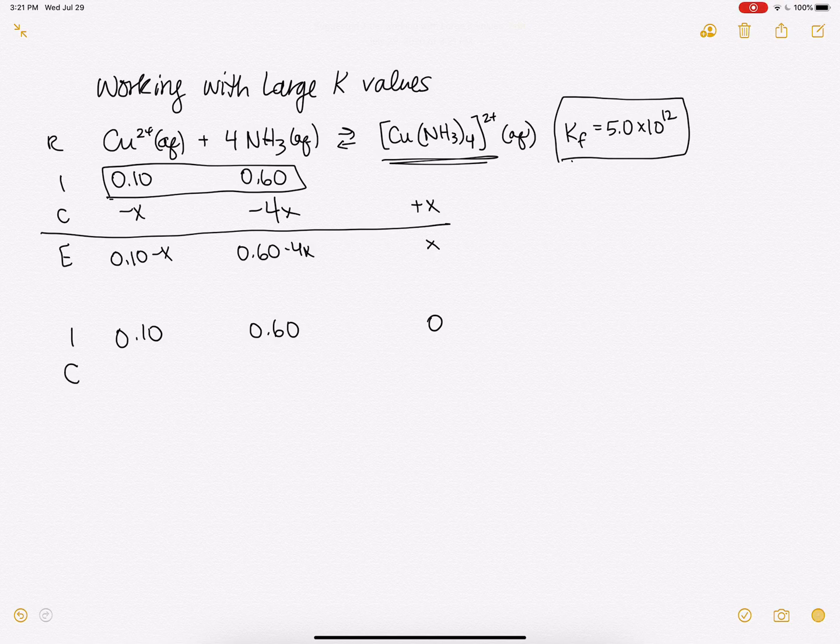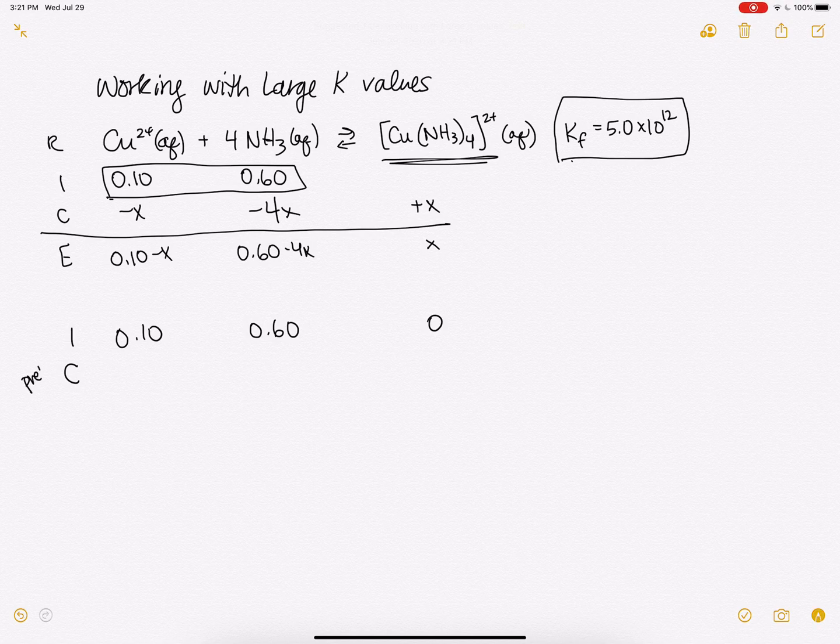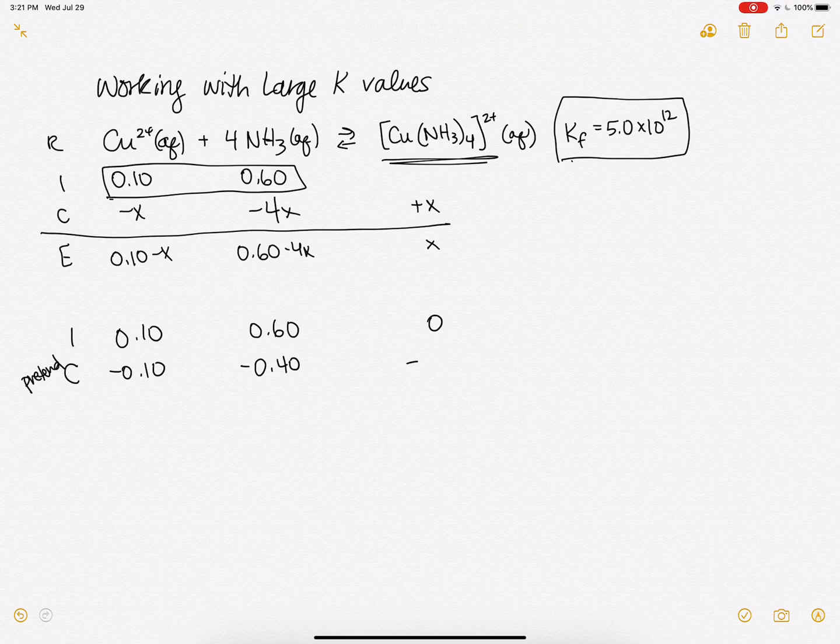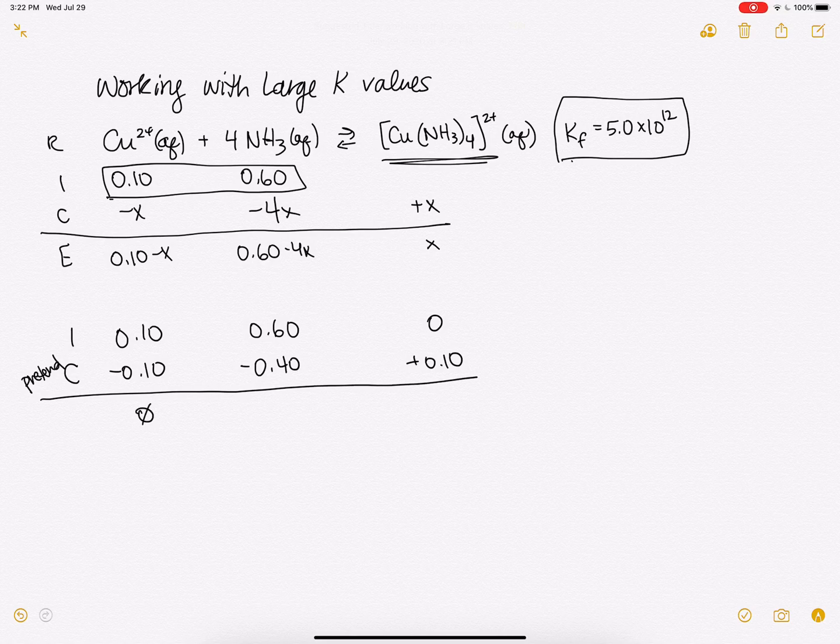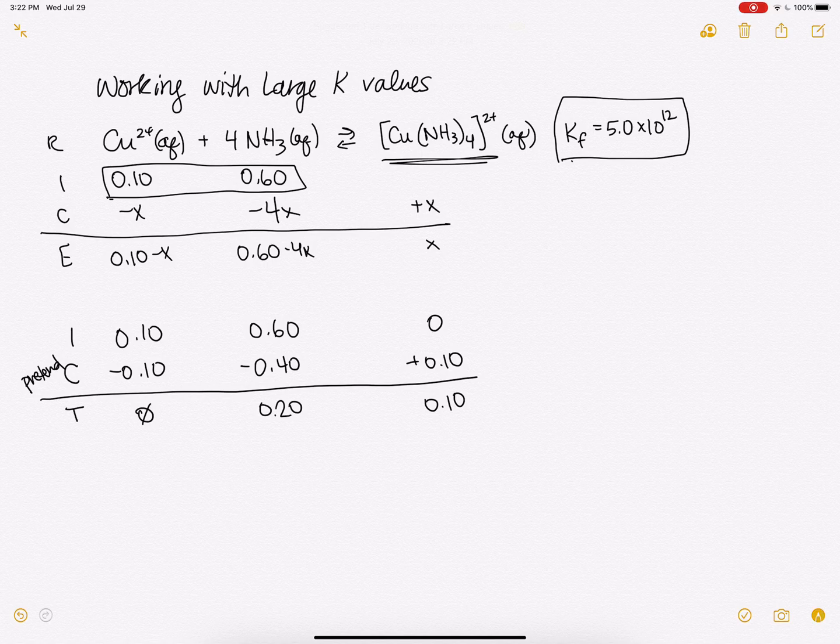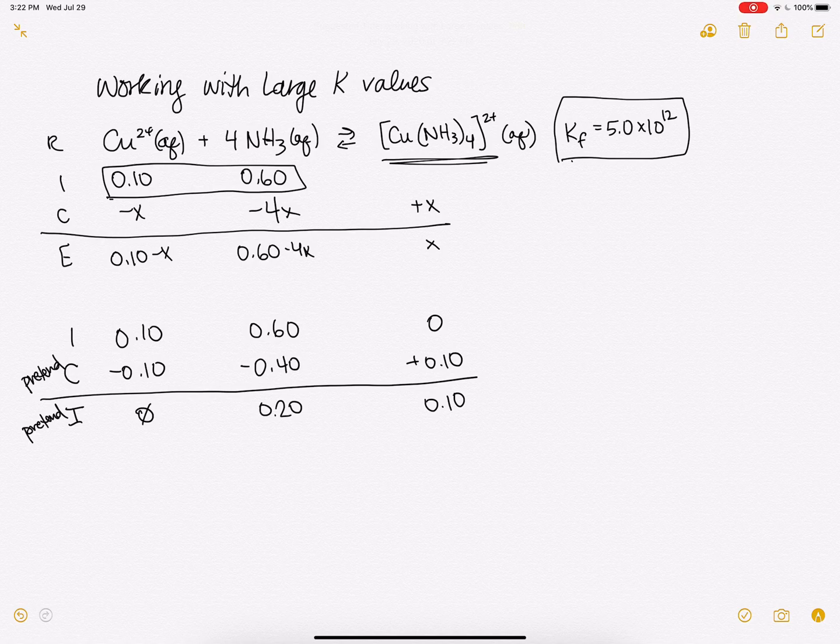This is our pretend change. So this would be minus 0.1, this would be minus 0.4, 4 times 0.1 because of the stoichiometry, and this would be plus 0.1. And then we're going to have 0, 0.2, and 0.1. And this is going to be our new pretend initial conditions.